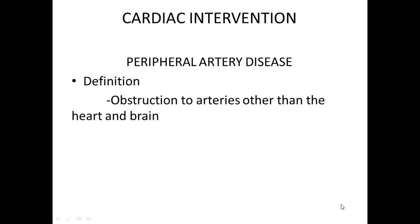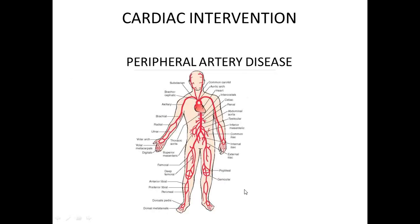It's important for you to know the arterial supply to the whole body. You already know the blood supply to the heart, and you should know the blood supply to the brain. When we talk about peripheral artery disease, we're mainly dealing with arteries. Some blood vessels tend to occlude or be obstructed more than others, so we'll pay more attention to those.